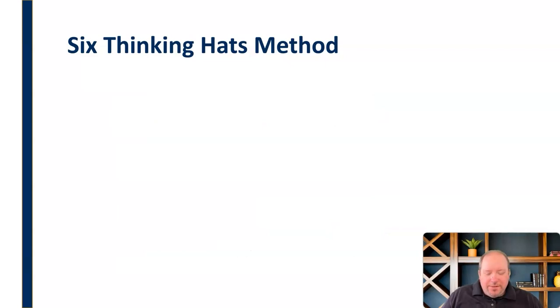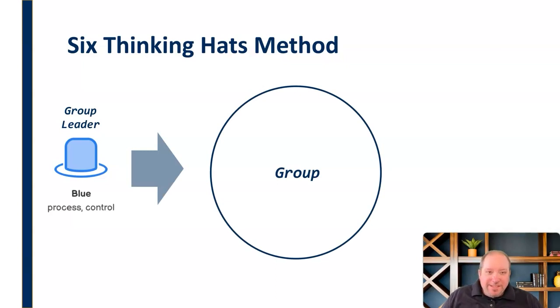Just to put this into practice, what this might look like—one potential way that you could use this would be the leader says, okay, this is the process we're going to use. We're going to use the six thinking hats method and I'm going to direct this and we're going to walk through each of these. And so the group buys into this and says, okay, let's do this.